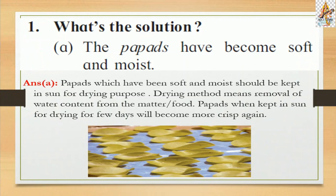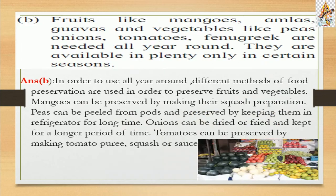Question one, part a: The papads have become soft and moist — what is the solution? The answer is papads which have become soft and moist should be kept in the sun for drying. This is one preserving method — the drying method — which means removal of water content from food. Papads kept in the sun for a few days will become crisp again.